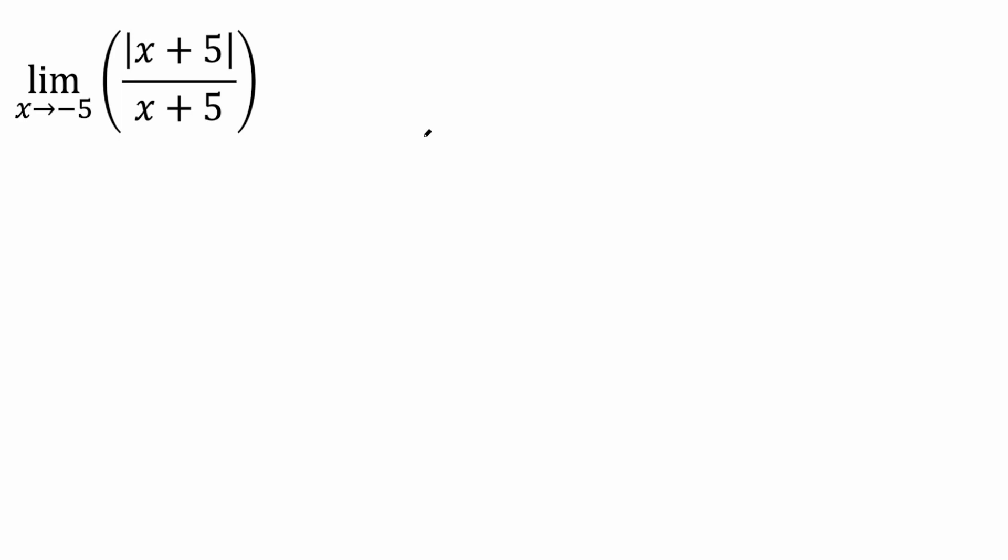So let's start this problem. What I always like to do is just plug in to see if it works. So it says the limit as x approaches negative 5. If I plug a negative 5 here, I get negative 5 plus 5, which is 0. Likewise, negative 5 plus 5 is 0. Having 0 divided by 0 is a red flag that you have to approach this problem in a different way.